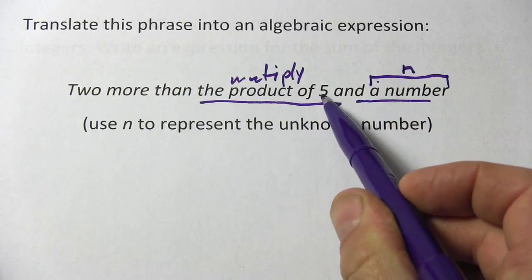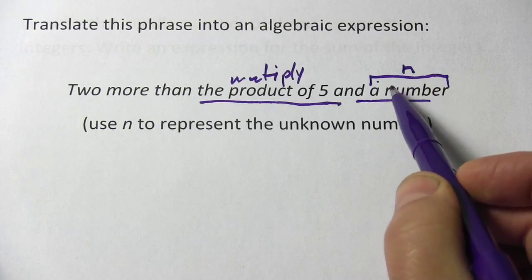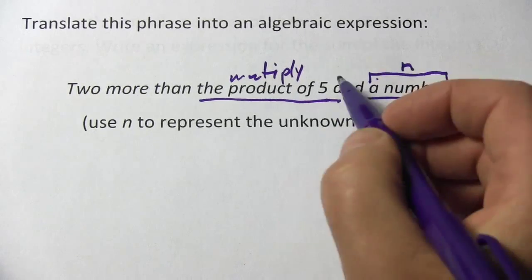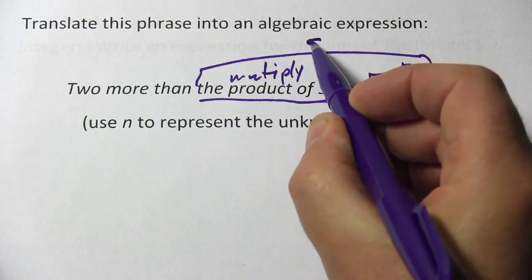So we're multiplying five and a number. We know the number is N, so if you multiply five times N, it's five N. So this chunk right here is just five N.